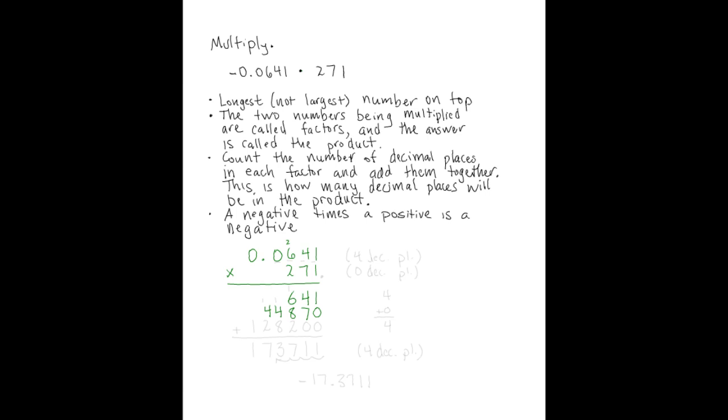We're done with the 7 in 271, and we're ready for the 2. 2 times 1. Oops, I almost forgot. We've got to use 2 placeholder 0s because we've moved on to the next digit. The 2 is in the hundreds place. 2 times 1 gives us 2. 2 times 4 gives us 8. 2 times 6 gives us 12.